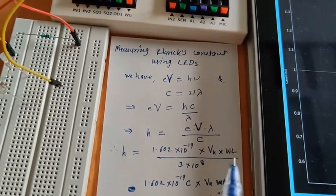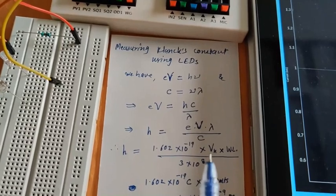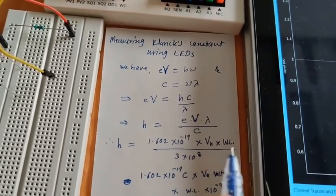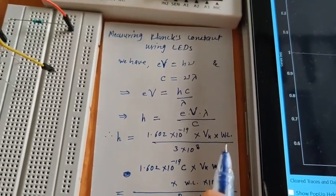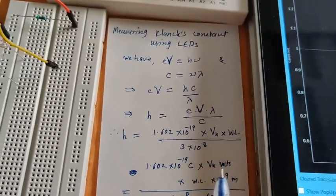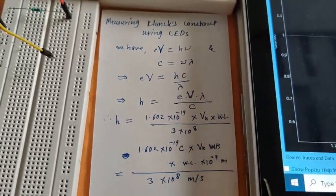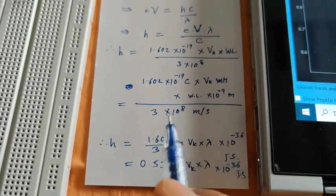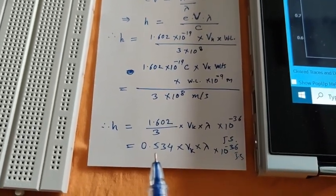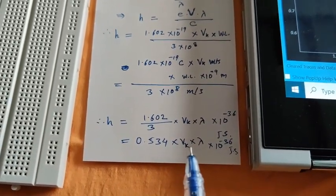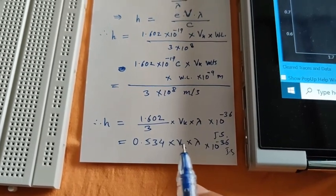The wavelength I will be taking in nanometers and voltage in volts. For this wavelength, I have also multiplied it by 10⁻⁹, and the value comes to be 0.534 × VK × λ × 10⁻³⁶ joule-seconds.